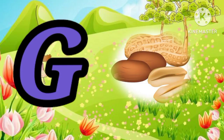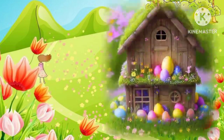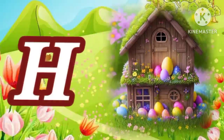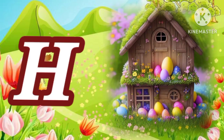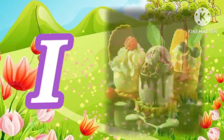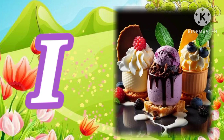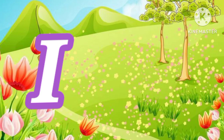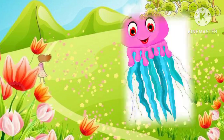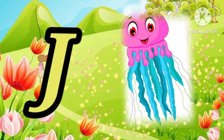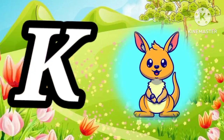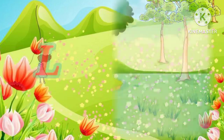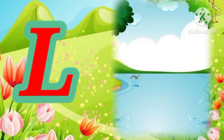G for donut, H for hut, I for ice cream, J for jellyfish, K for kangaroo, L for lake.